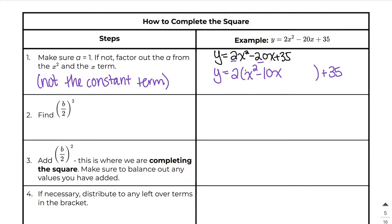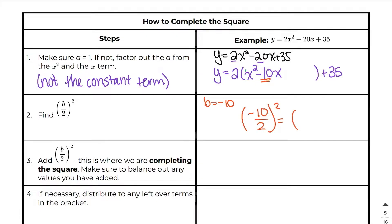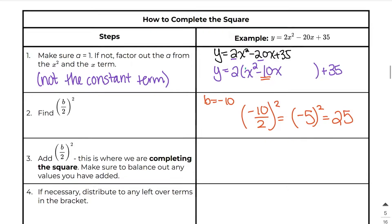The next thing we need to do is figure out what (b/2) squared is going to be. Here our b value is negative 10. So I'm going to take negative 10, divide that by 2, and then square it. Negative 10 divided by 2 is negative 5, and negative 5 squared is positive 25. So that is what (b/2) squared is.